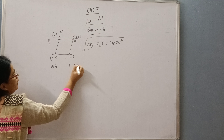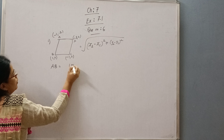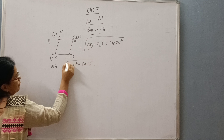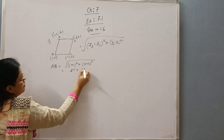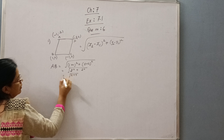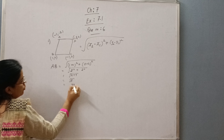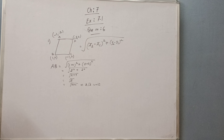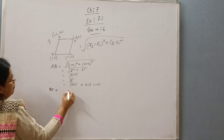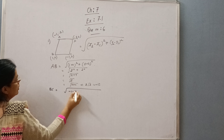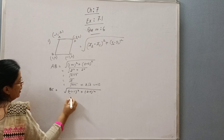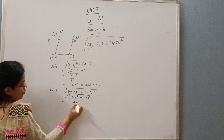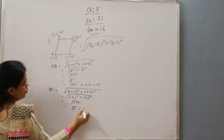First we find AB: square root of (1 minus (-1))² plus (0 minus (-2))², which gives square root of (2)² plus (2)², that is square root of 4 plus 4, equal to root 8, which is 2 root 2 units. Now for BC: square root of (-1 minus 1)² plus (2 minus 0)², giving square root of 4 plus 4, equal to root 8, that is 2 root 2 units.